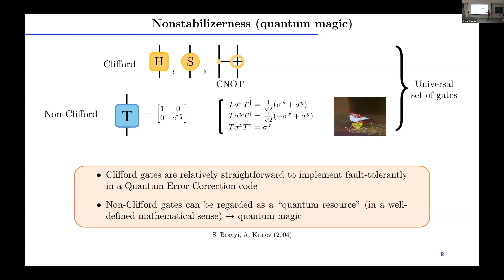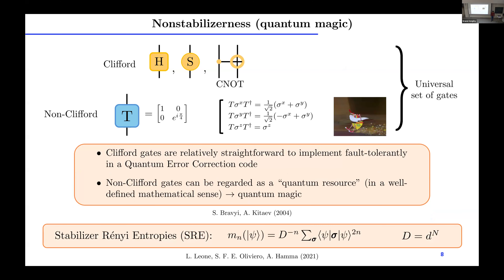Non-Clifford gates are often difficult to implement in practice, so they are a quantum resource — something difficult to generate. That's why people, in particular from the seminal paper by Gottesman and Kitaev, started to use the word quantum magic. Quantum magic is essentially the amount of non-Clifford resources you need to prepare your state. Here we will use the stabilizer Rényi entropies, a nice measure introduced by Lorenzo some years back, which is basically a participation entropy in the space of Pauli strings.